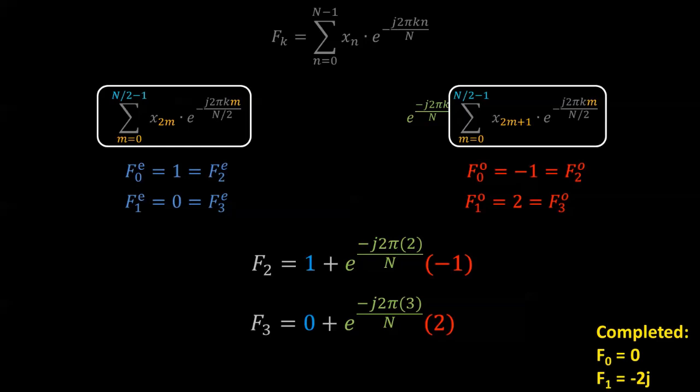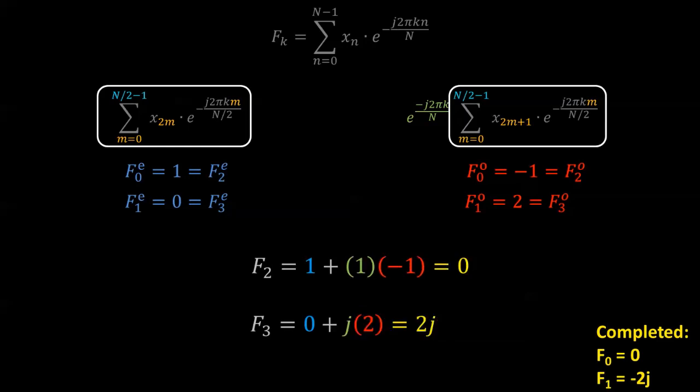Once we calculate that, we can sum everything together and we've completed all the frequency bins, f 0 through f 3. This is exactly what we expect because we have a 1Hz sine wave and we get a value in the first frequency bin of negative 2j which, once added together, equals 4j and equals an amplitude of 1 once averaged. Check out my DFT video if that doesn't make sense to you.